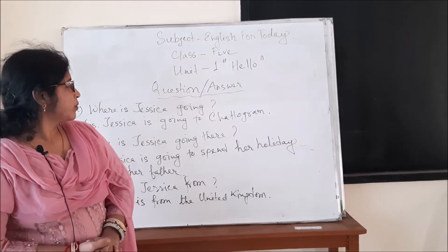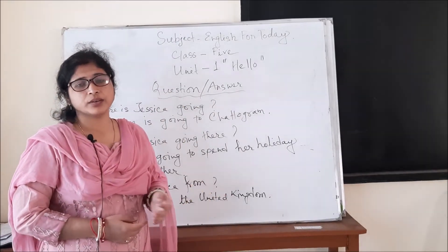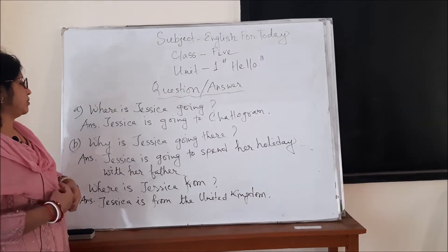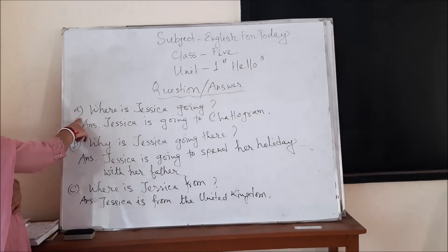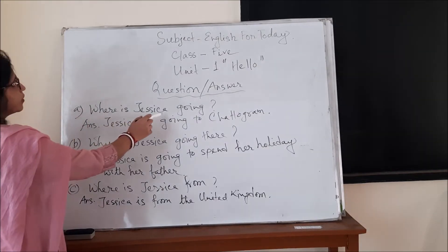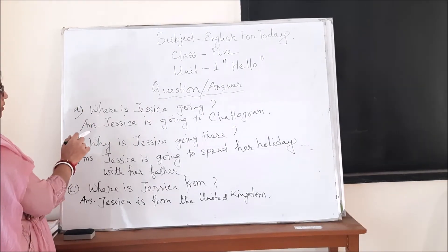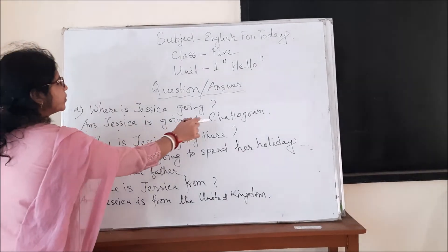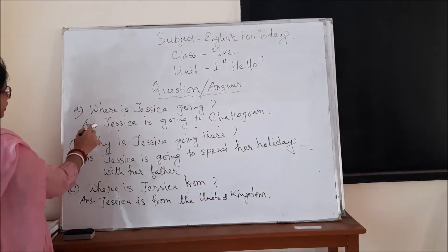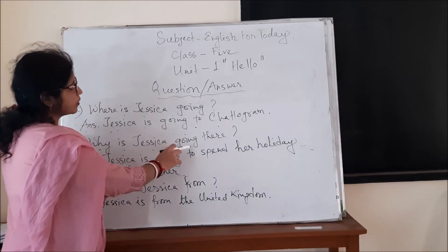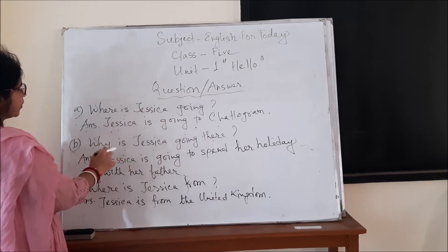Now we are looking at the exercise written on the whiteboard. There are some questions and we will try to answer them. Everyone, look at the board. The first question is number A: Where is Jessica going?